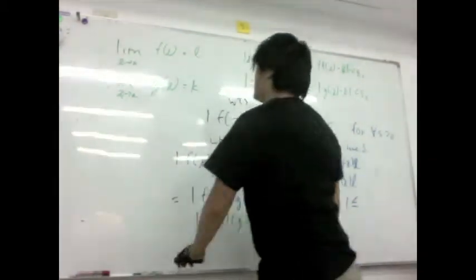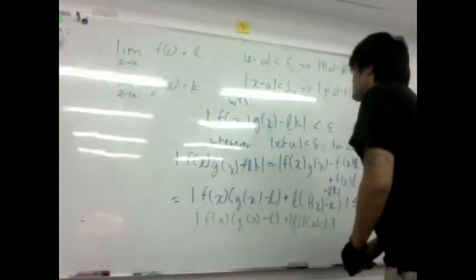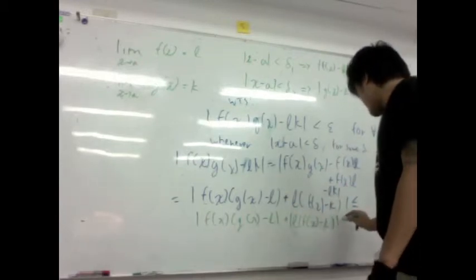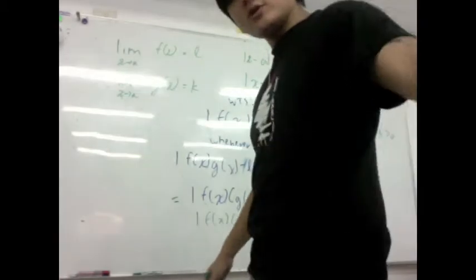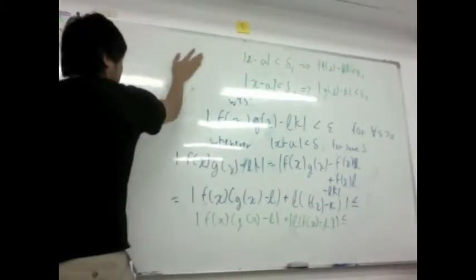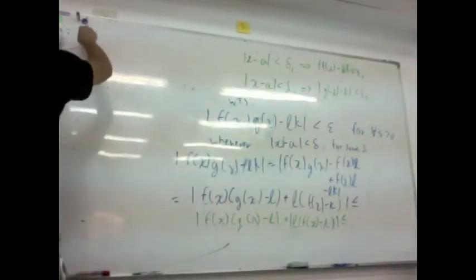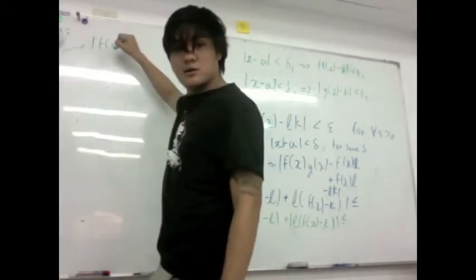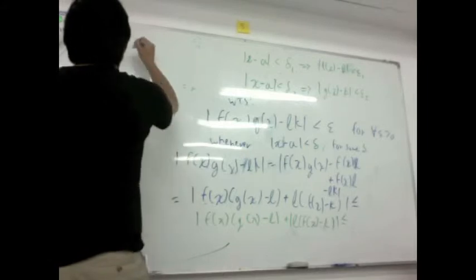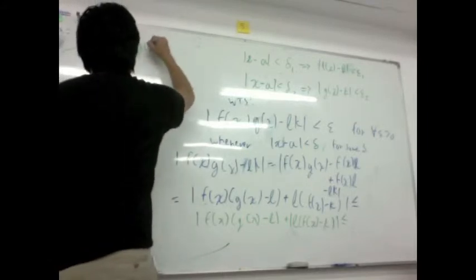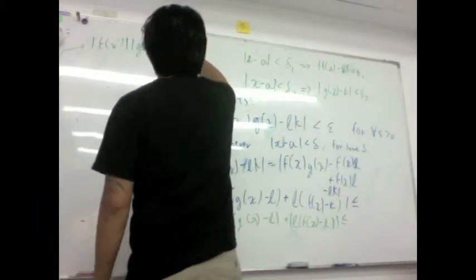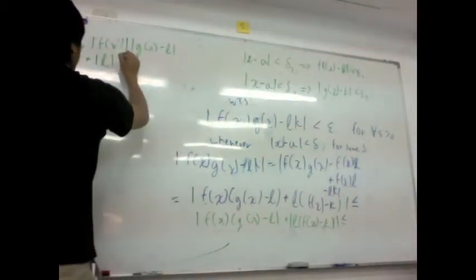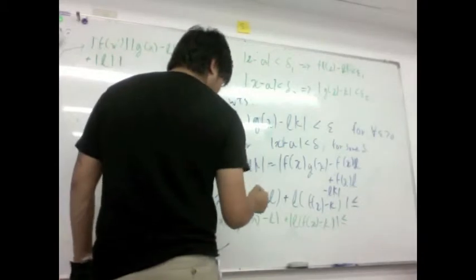So now, what can you apply here? Well, first you have an addition. So you can apply triangle inequality. This guy is less or equal to f of x times g of x minus l absolute value, plus l absolute value times f of x minus k.